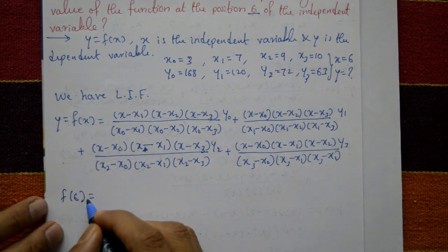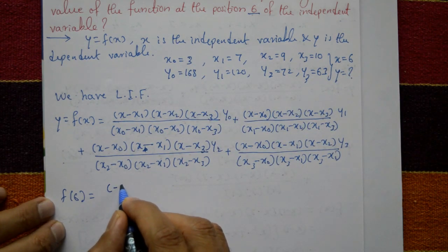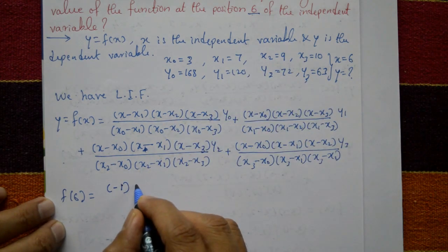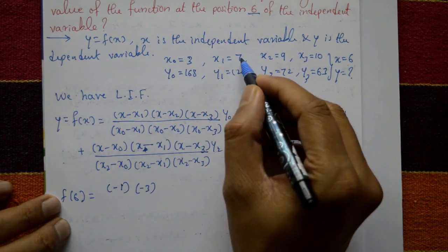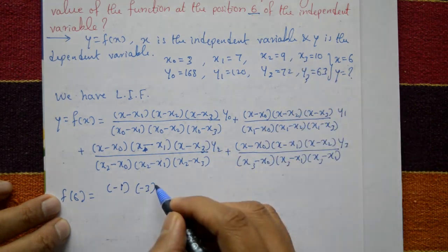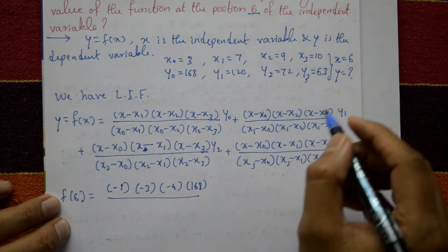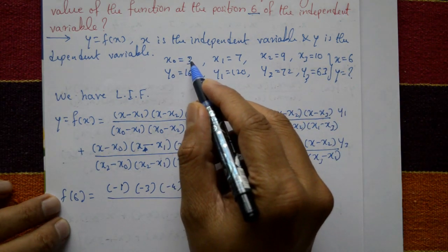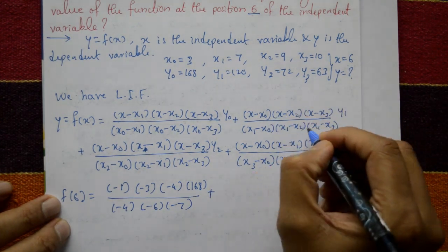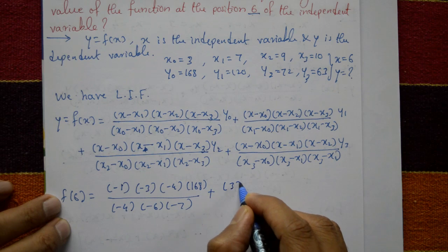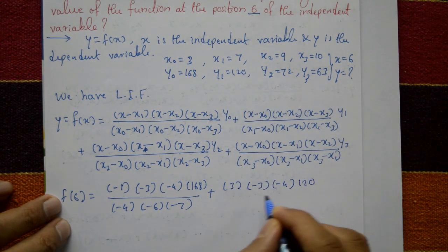Now f of 6 is equal to: first term — (6 minus 3)(6 minus 9)(6 minus 10) times y0 which is 168, divided by (x0 minus x1)(x0 minus x2)(x0 minus x3). Plus second term — (6 minus 3)(6 minus 9)(6 minus 10) times y1 which is 120, divided by (x1 minus x0)(x1 minus x2)(x1 minus x3), giving values 4, minus 2, minus 3.